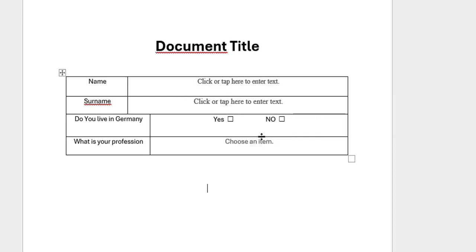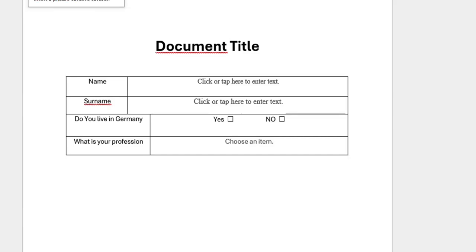Those are the main controls you may need for your form, but there are others as well — for example, if you need to include an image you can add a Picture content control, or you can also add a Building Block Gallery content control.